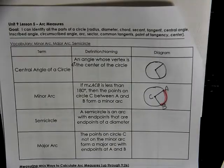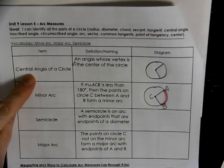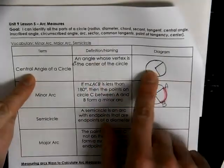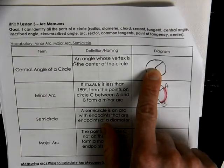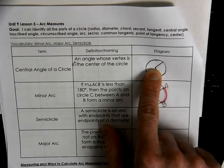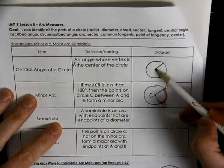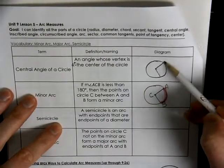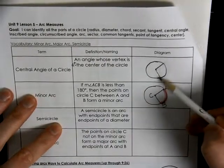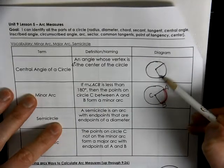This is geometry lesson five, talking about arcs. We have a central angle, and a central angle is when the vertex is at the center of the circle. When you have an angle with the vertex at the center, the two sides of the angle are going to come up and touch the side of the circle at two points.